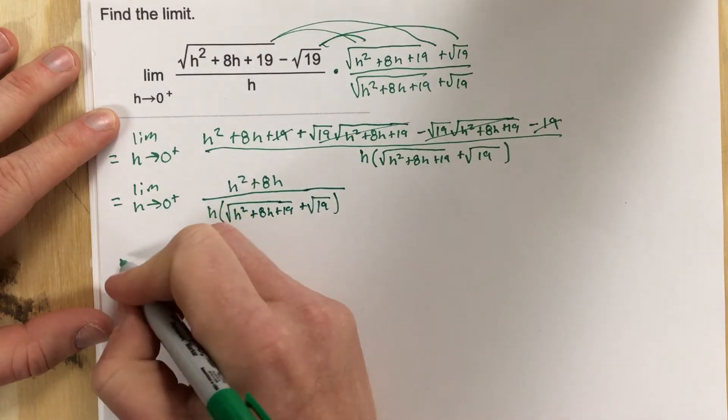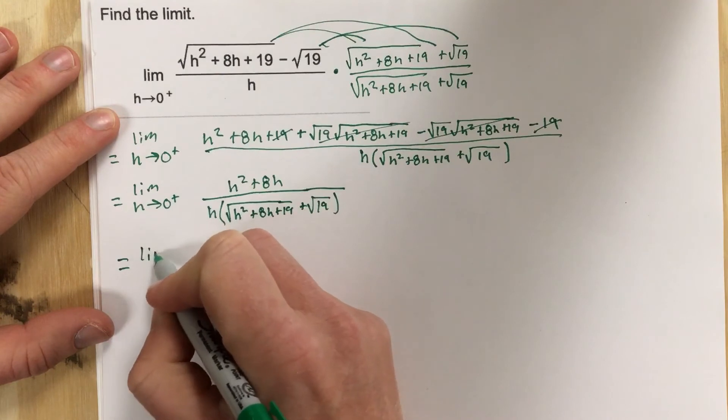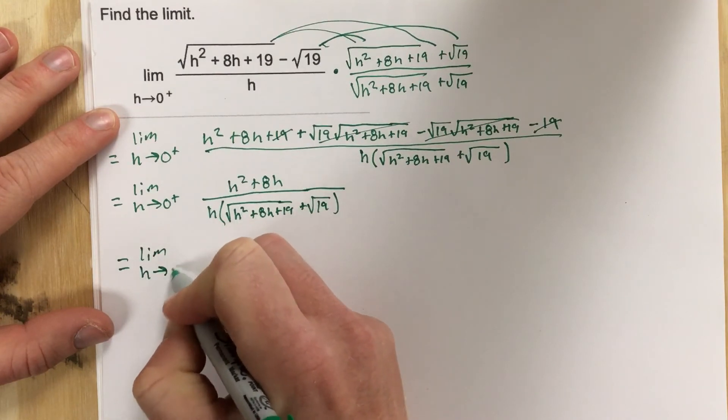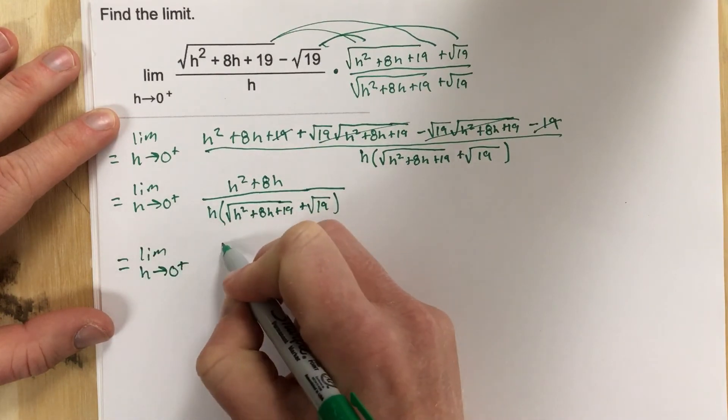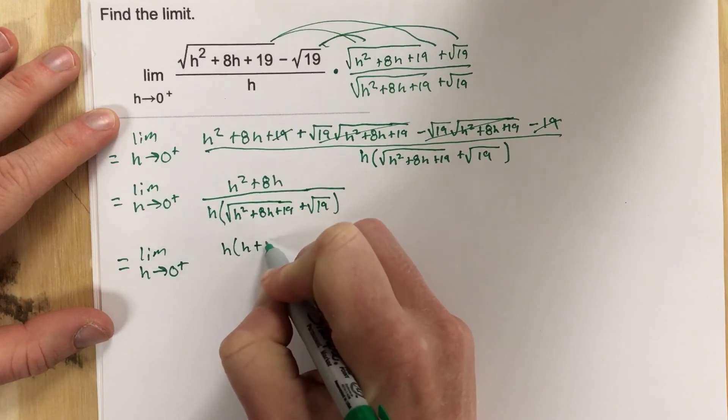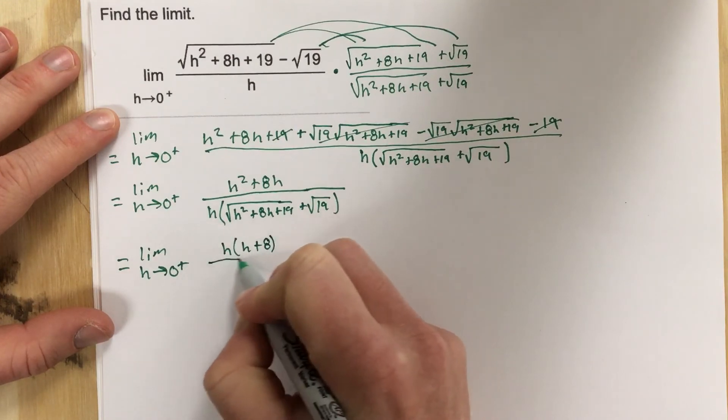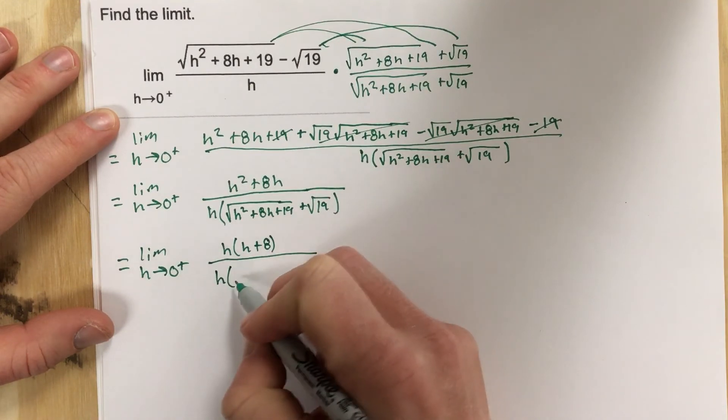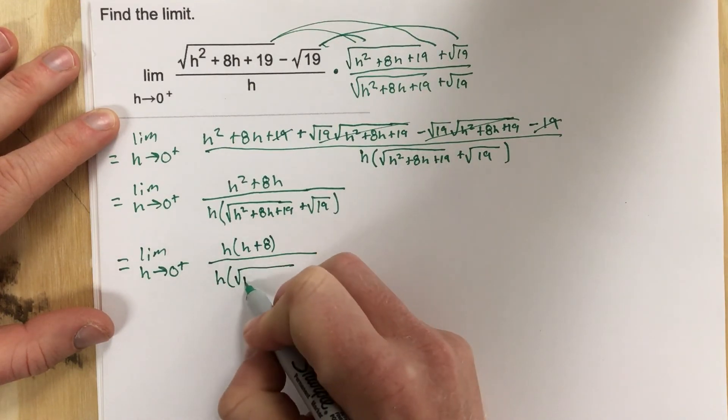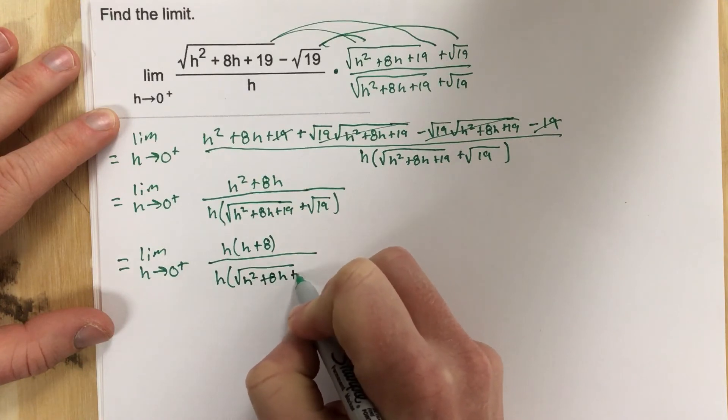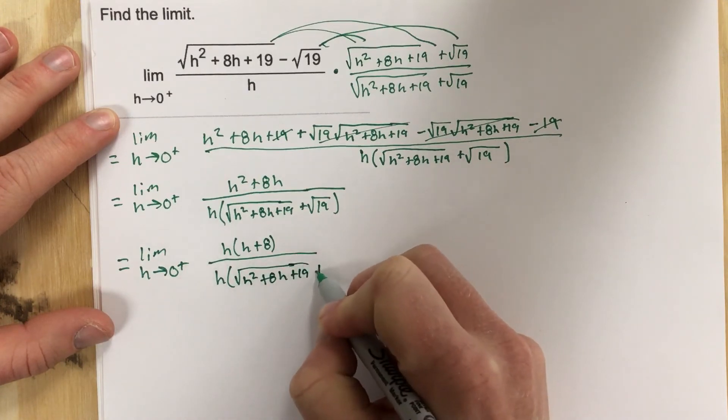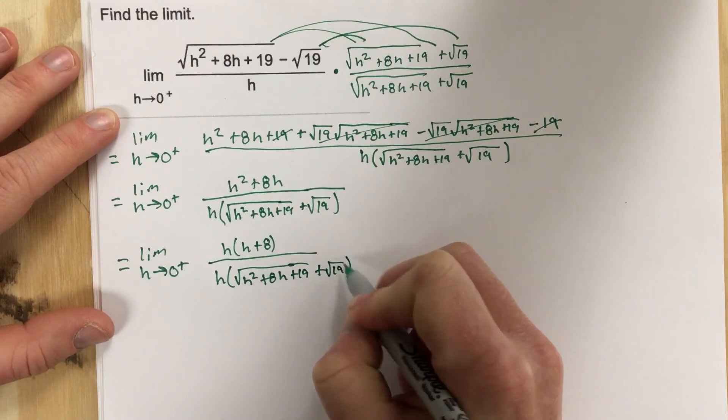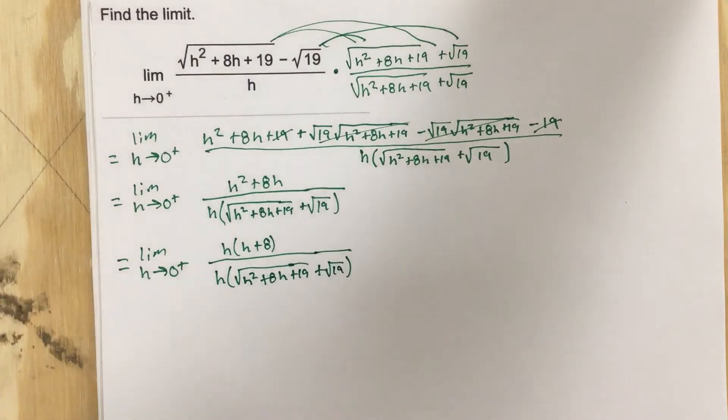I'm now going to factor an h out of the top and that gives me limit as h approaches zero from the right. So I'm going to factor an h all over h. I have h root h squared plus 8h plus 19 plus root 19. The h's are going to cancel here.